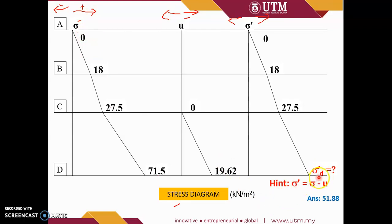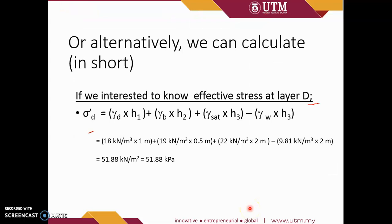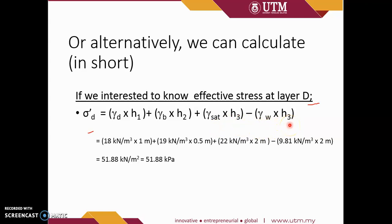The effective stress at D is 51.88 kN/m² or kilopascal. Alternatively, we can calculate in short if we are interested to know the effective stress at layer D — we can directly calculate gamma dry for layer 1, gamma buoyant for layer 2, gamma saturated for layer 3, minus the pore water pressure at layer 3. We obtain the same value: 51.88 kPa.